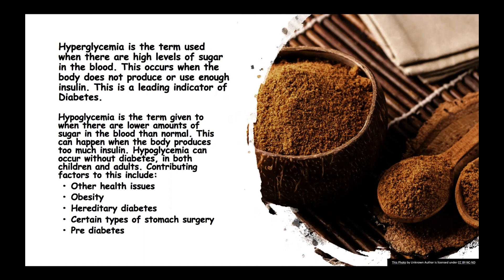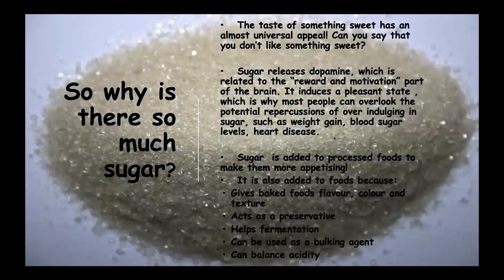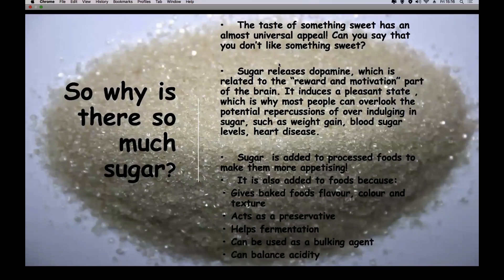If we have excess glucose in our bodies that we don't need for energy, a process begins to convert this to glycogen, which is then stored in the form of glucose in the body. We'll go into more detail on this in future macronutrient modules.